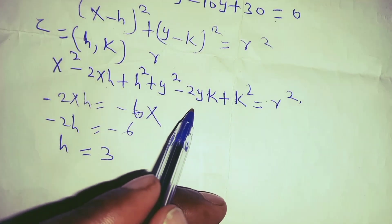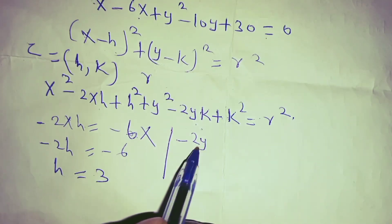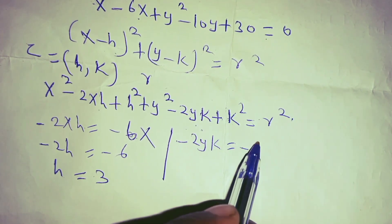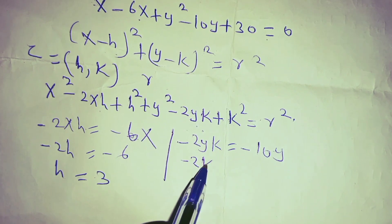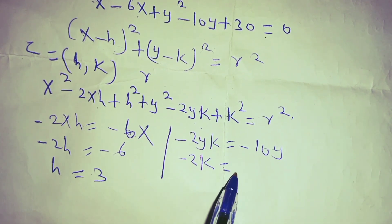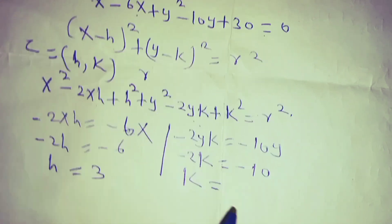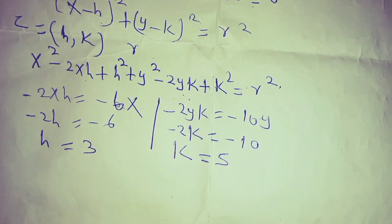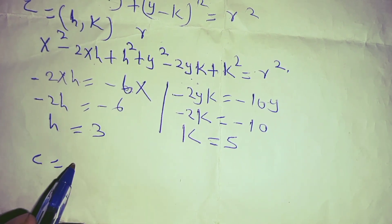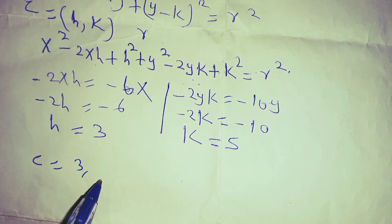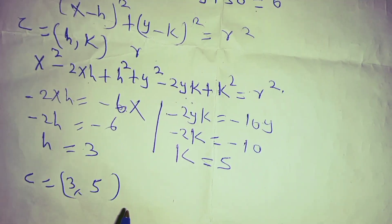Similarly, to obtain the value of k, you compare the coefficient of y. Here we have negative 2yk equals negative 10y, meaning negative 2k equals negative 10, so k equals 5. From these two results, the center is (3, 5).